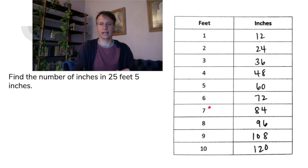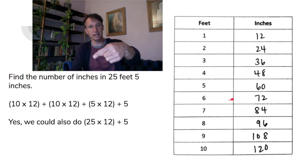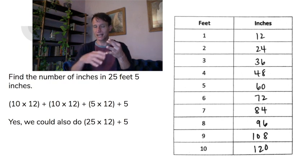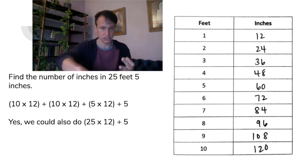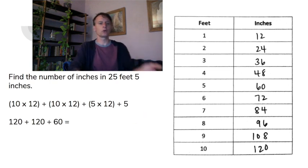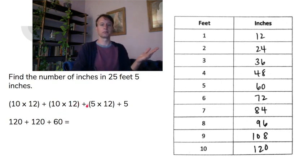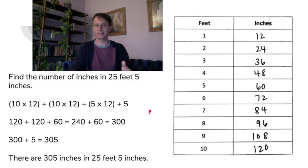Twenty-five feet five inches — how many inches altogether? Break down the twenty-five as ten, ten, and five. That gives us one hundred twenty, plus one hundred twenty, plus sixty, plus five. One hundred twenty plus one hundred twenty is two hundred forty, plus sixty is three hundred, plus five is three hundred five. So there are three hundred five inches in twenty-five feet five inches. You could also reason: four twenty-fives make one hundred, and there are three fours in twelve, so twenty-five times twelve is three hundred.